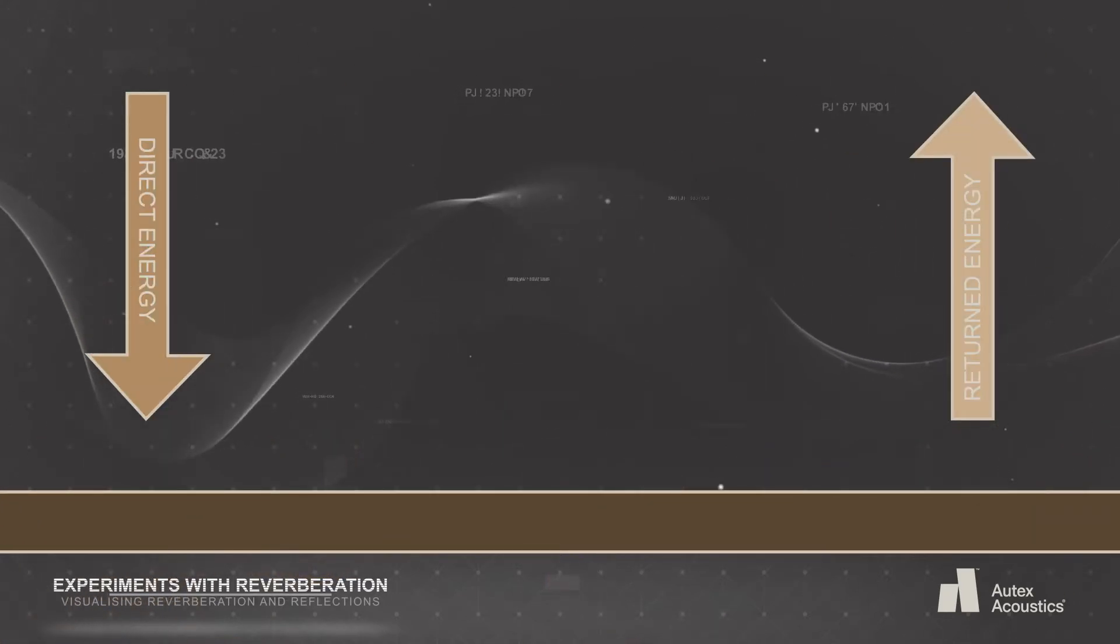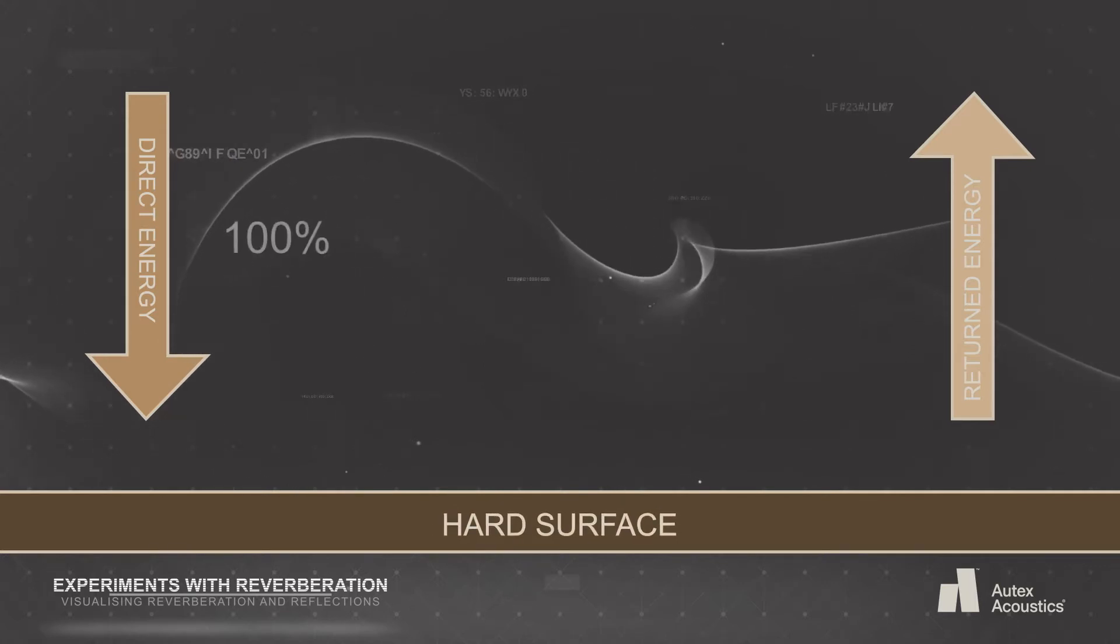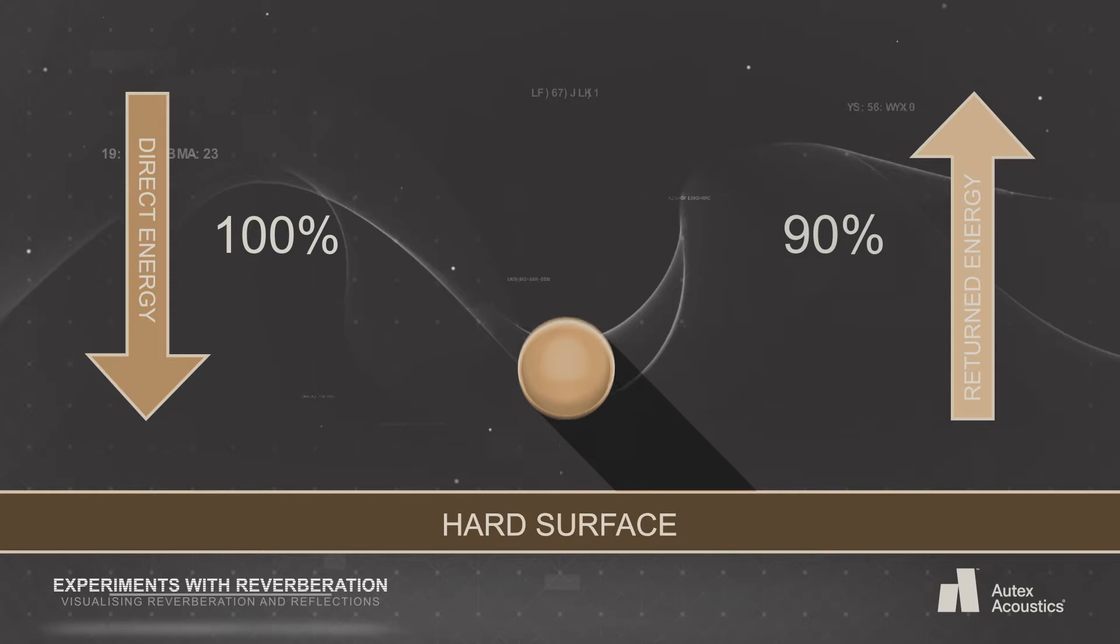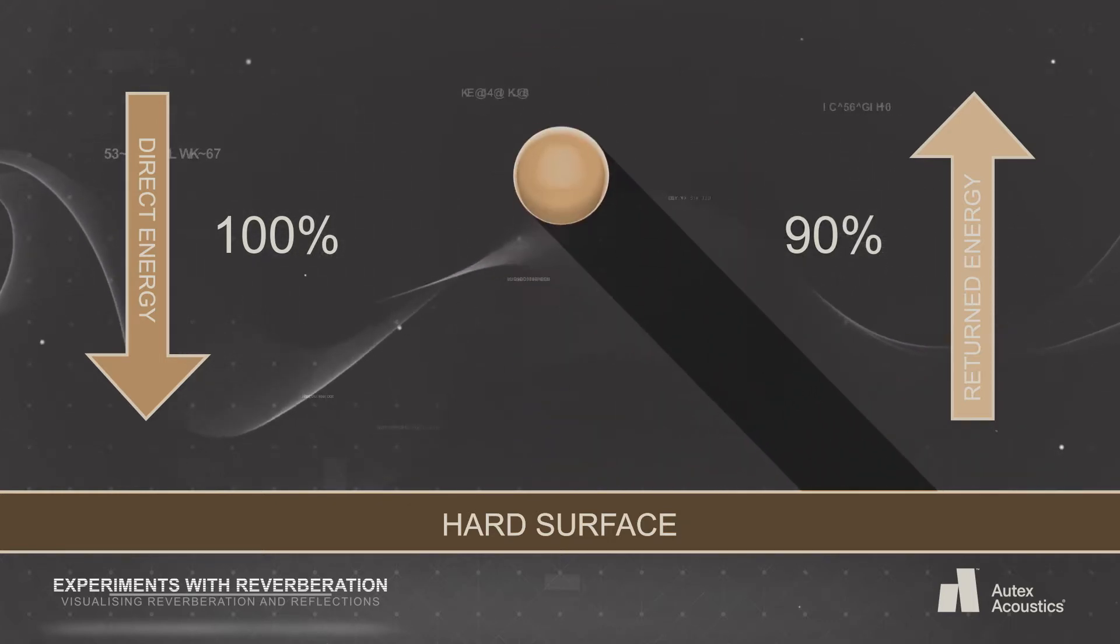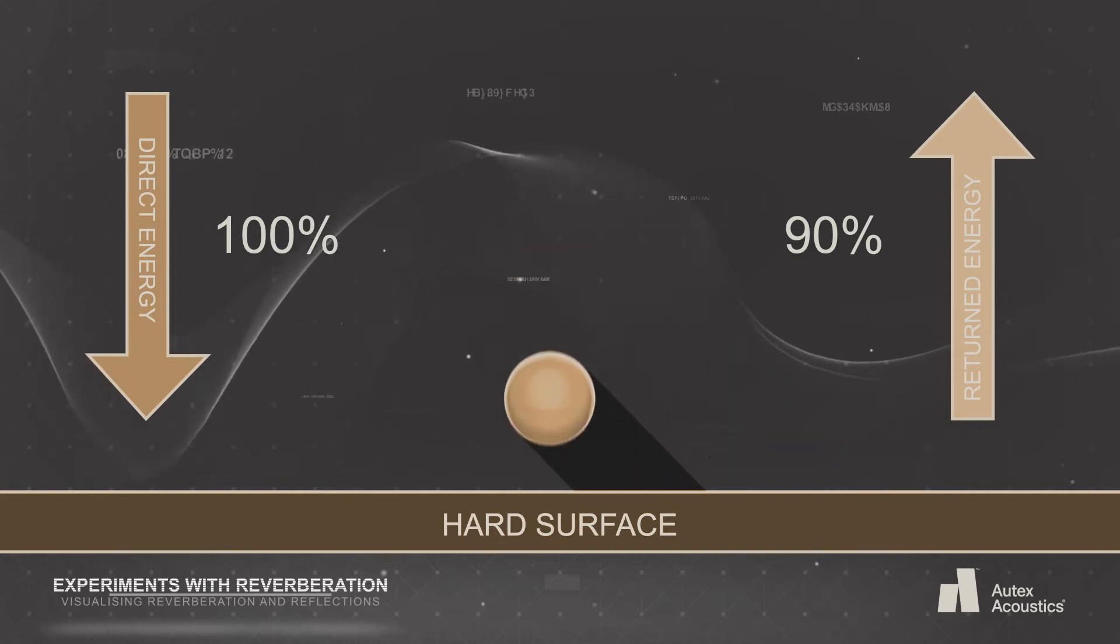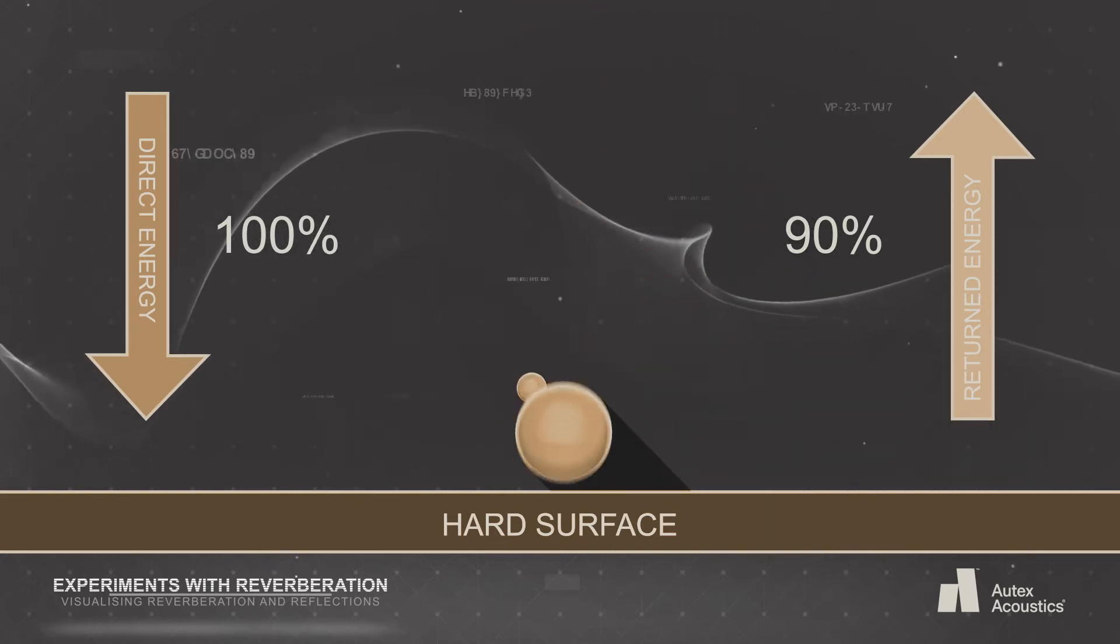This ball is bouncing off a hard surface like concrete. As we can observe, most of the energy of the ball is reflected back into the ball, and it leaves the surface with almost as much energy as it started with. Of course, gravity won't affect sound waves, but it gives us a good example of just how long the ball will retain its energy.